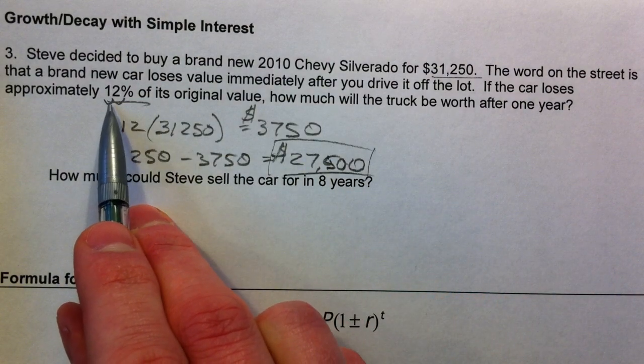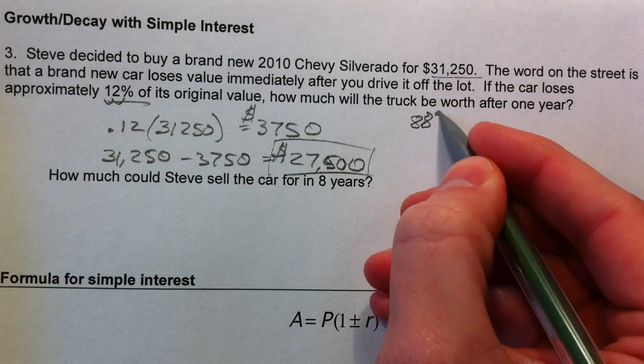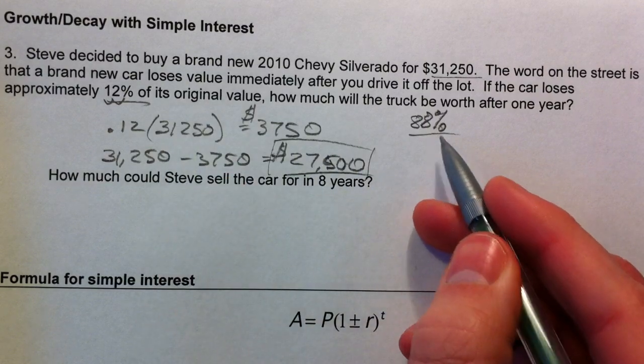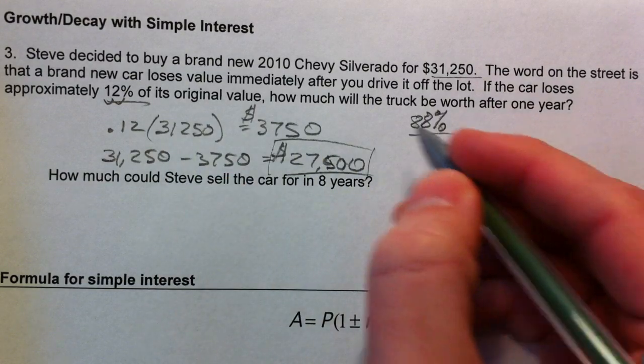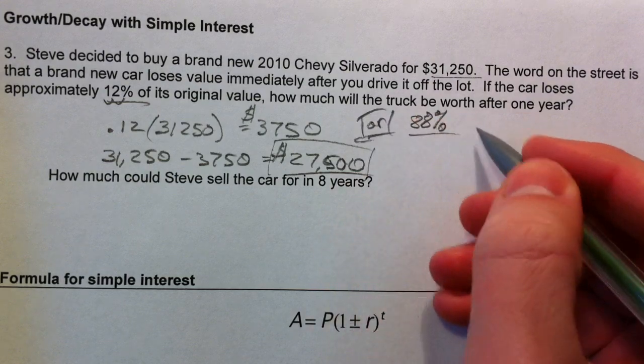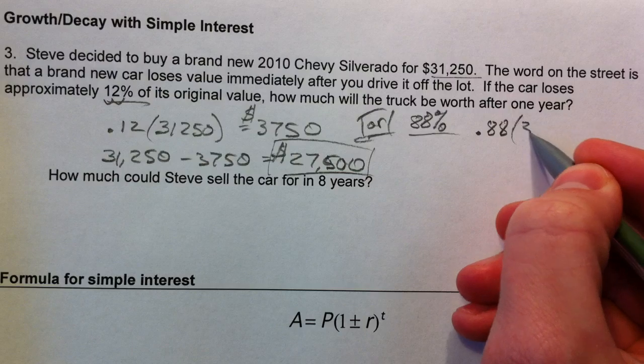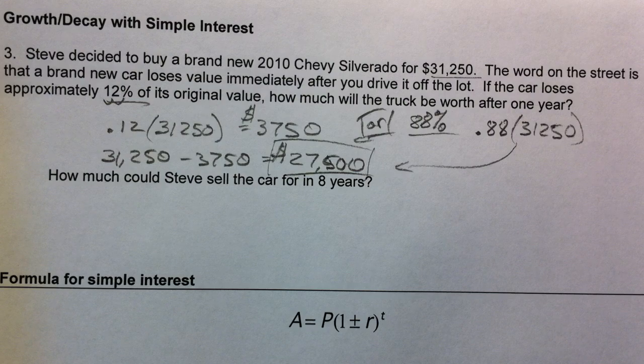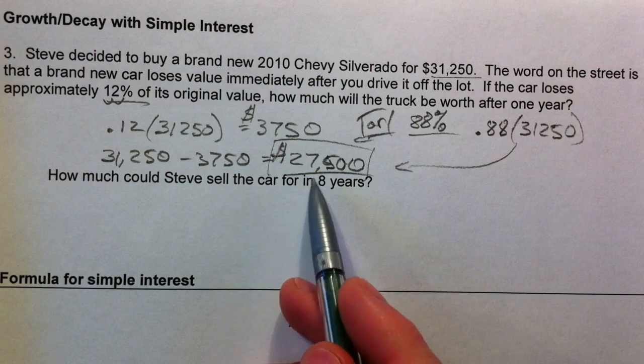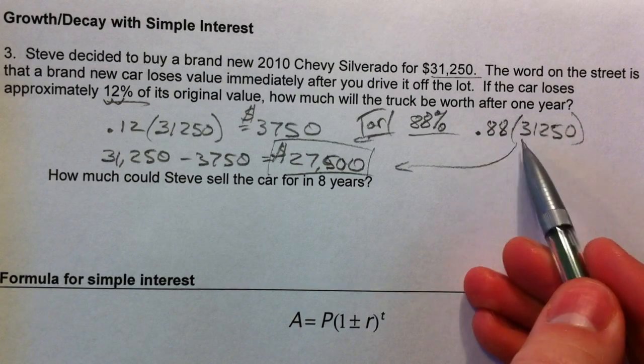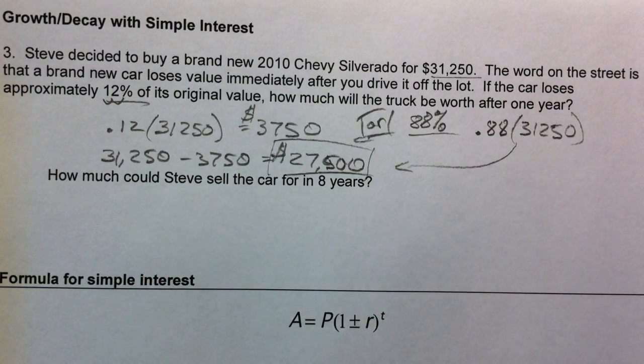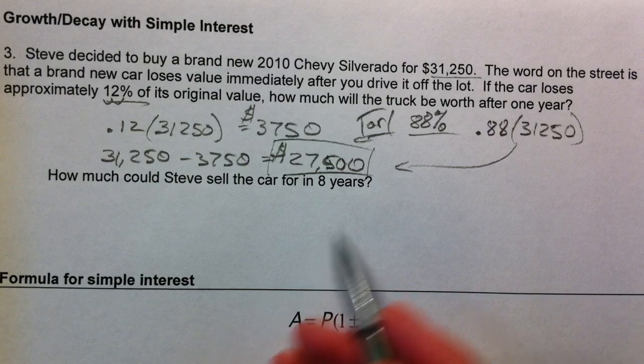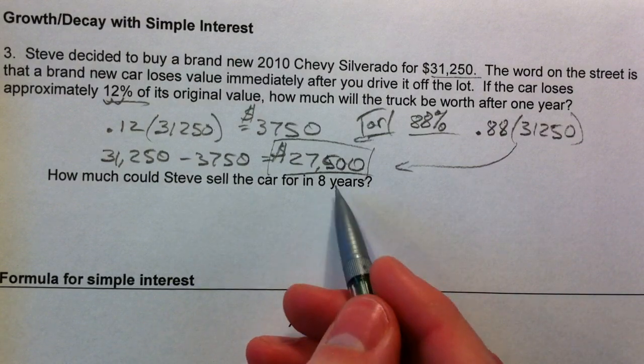Now that's all well and good, but another way you can do it is that it loses 12%, or it's 88% of its original value. That's 100 minus the 12, and you take care of the subtraction to begin with. So you could do it by multiplying by 0.88 times your 31,250, and you get the same exact thing. 0.88 times 31,250, you get 27,500. The reason I do it this way is because there's one less step involved. The reason we do it is because if you want to repeat it for 8 years—after 1 year, 2 years, 3 years—we're going to continue to multiply by 0.88.